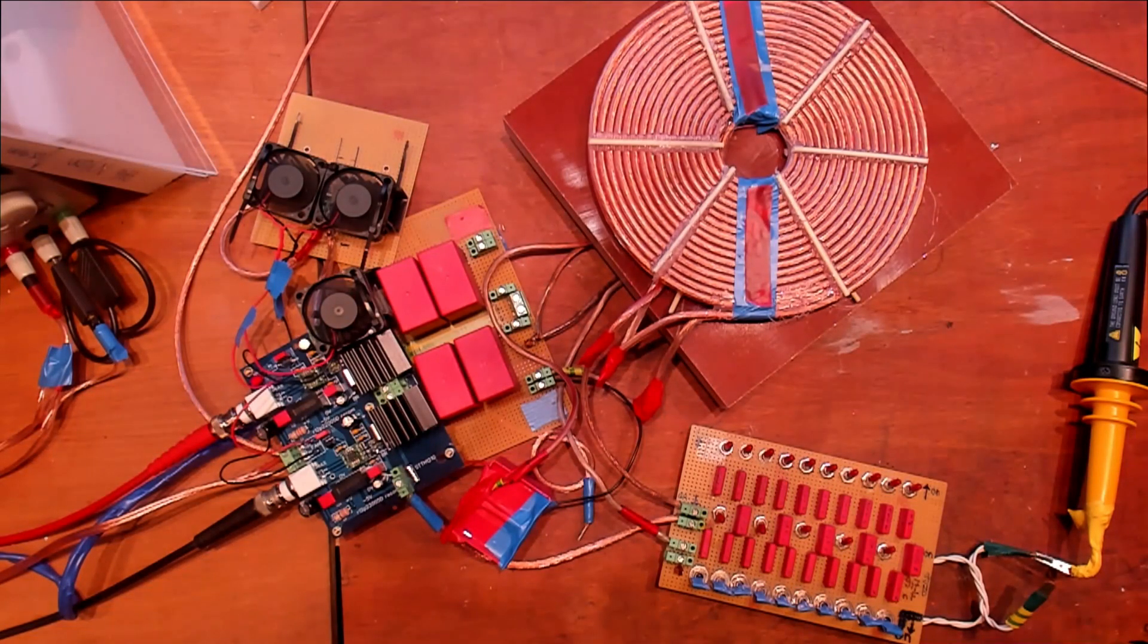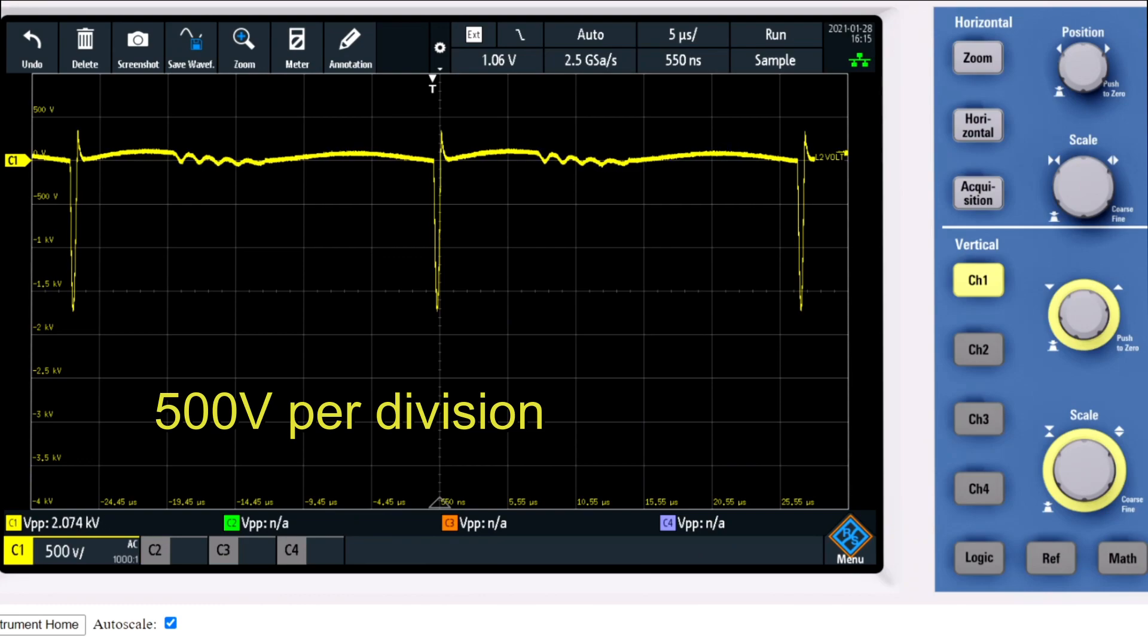I'll switch the power on and I'll show you the scope shot now. Right now, the signal is 500 volts per division, so we've got one, two, three, and a little bit more, so around 1700 volt impulses.